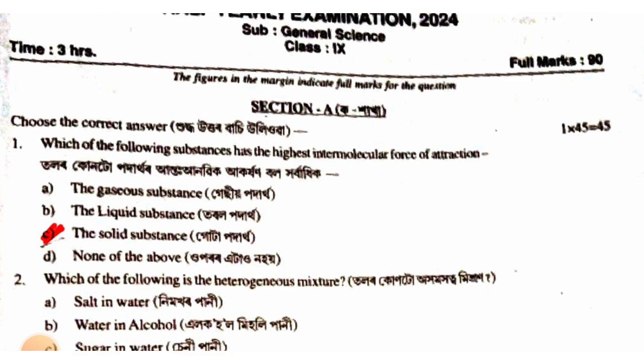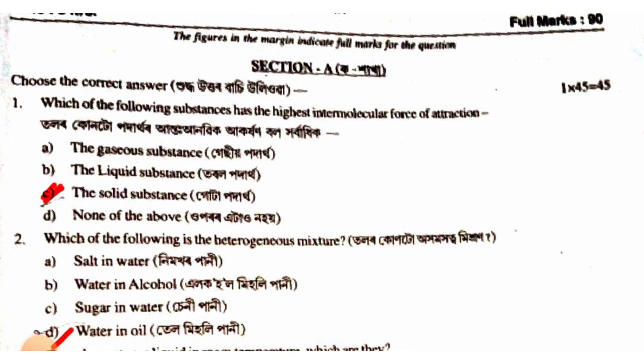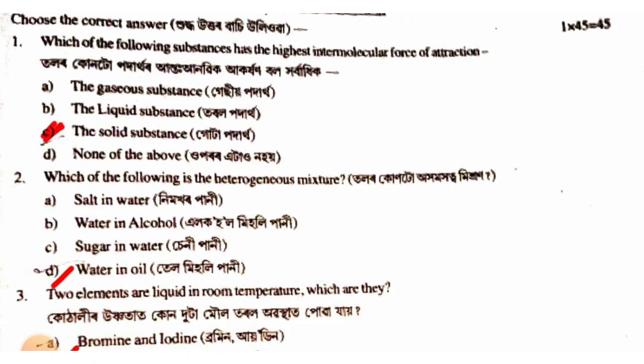Which of the following substances have the highest intermolecular force of attraction? The answer is option C — the solid substance. Next question: which of the following is a heterogeneous mixture?